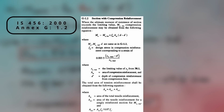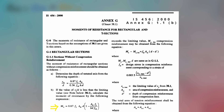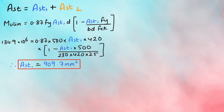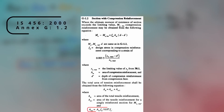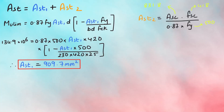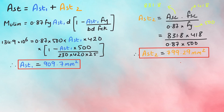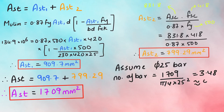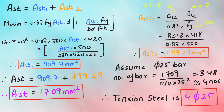NXG 1.2 also gives the formula for total tension reinforcement as AST1 plus AST2. AST1 is calculated using the formula from NXG 1.1B; inputting values gives AST1 as 909.7 mm². AST2 is calculated using the formula from NXG 1.2; with ASC known, AST2 solves to 799.29 mm². Hence, total tensile reinforcement is AST1 plus AST2, which is 1709 mm². Assuming 25 mm diameter bars, 4 bars are required — so tension reinforcement is designed as 4 bars of 25 mm.